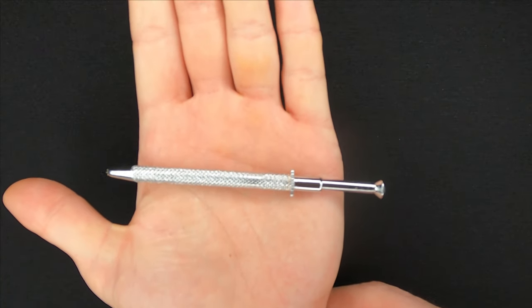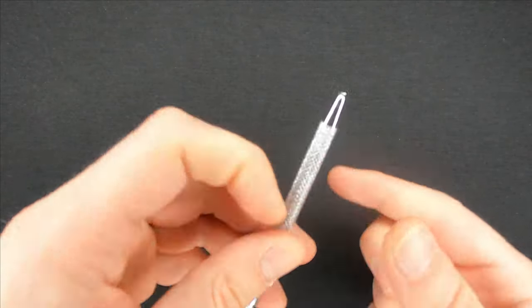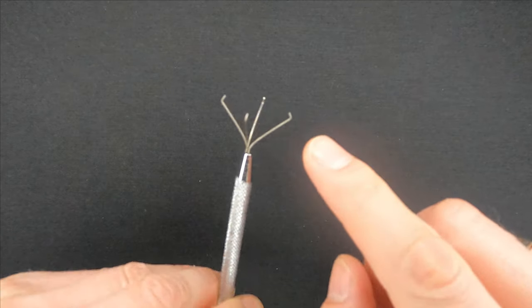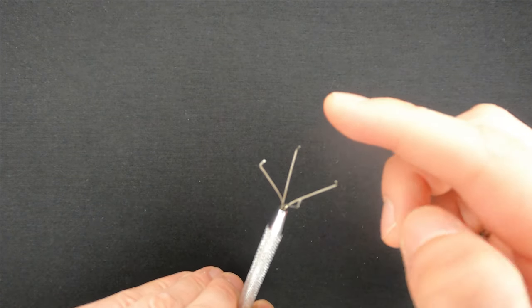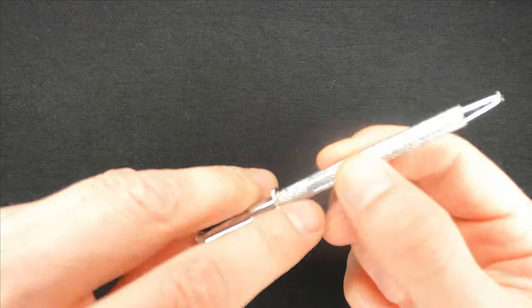To operate it you just simply push this handle on the back of the tool which releases four prongs from the front of it and allows you to pick up small fishing accessories or other small work pieces.